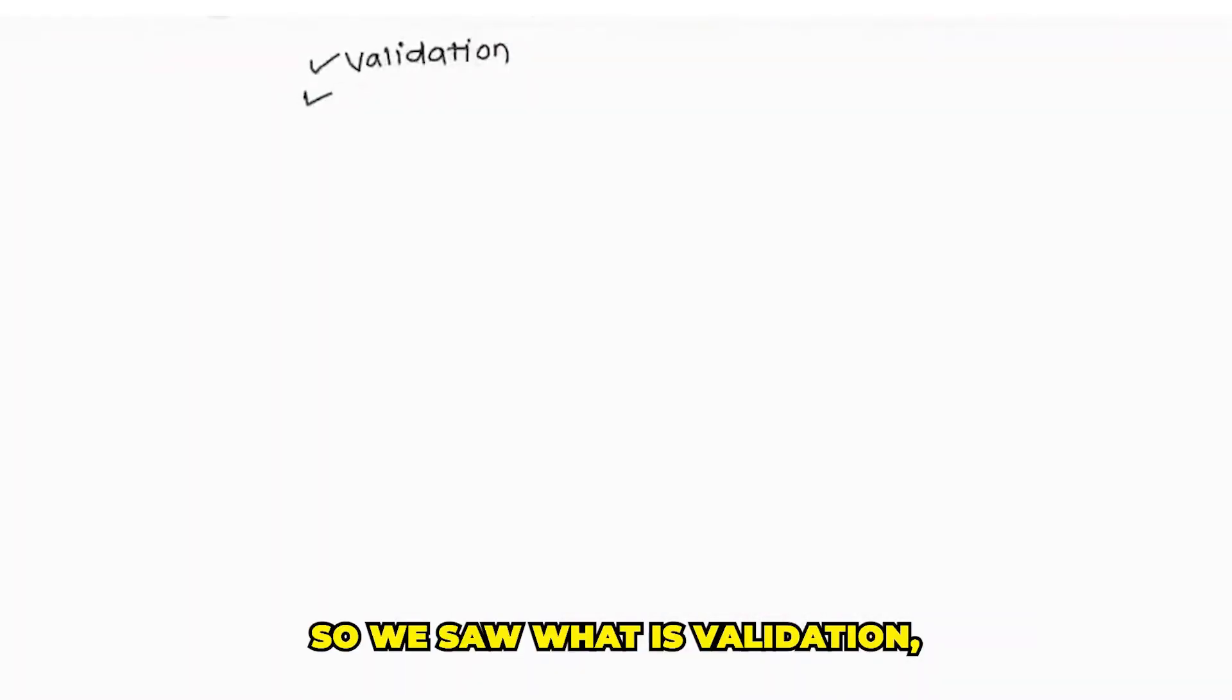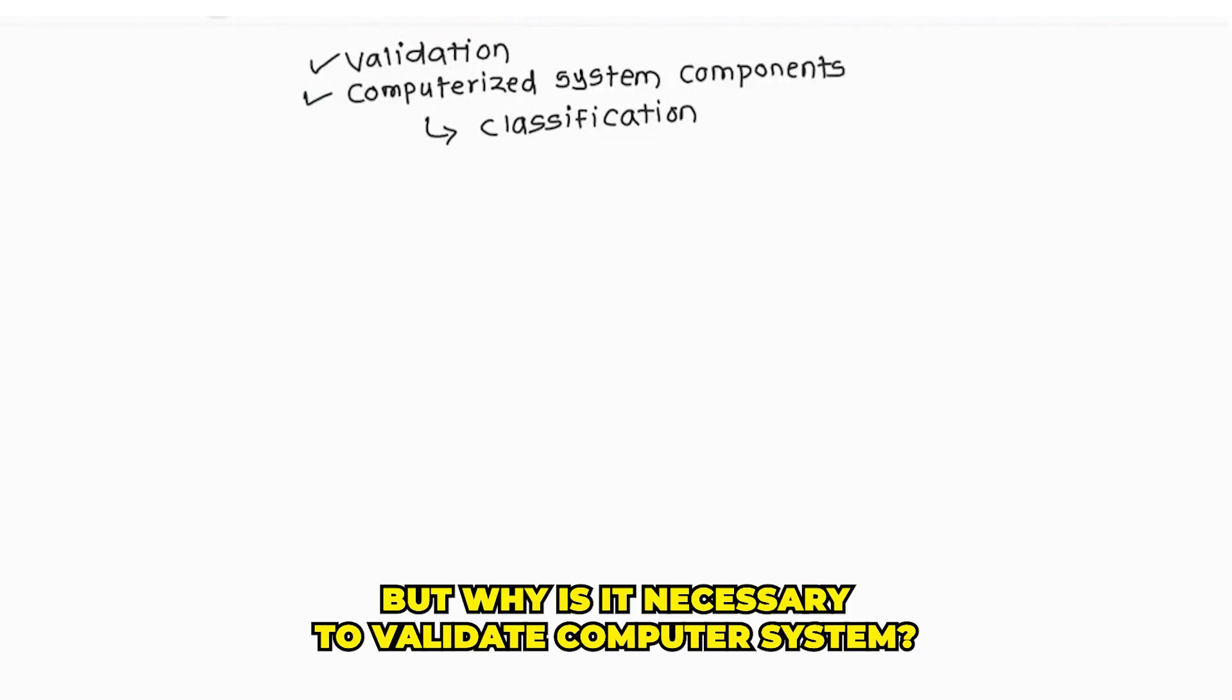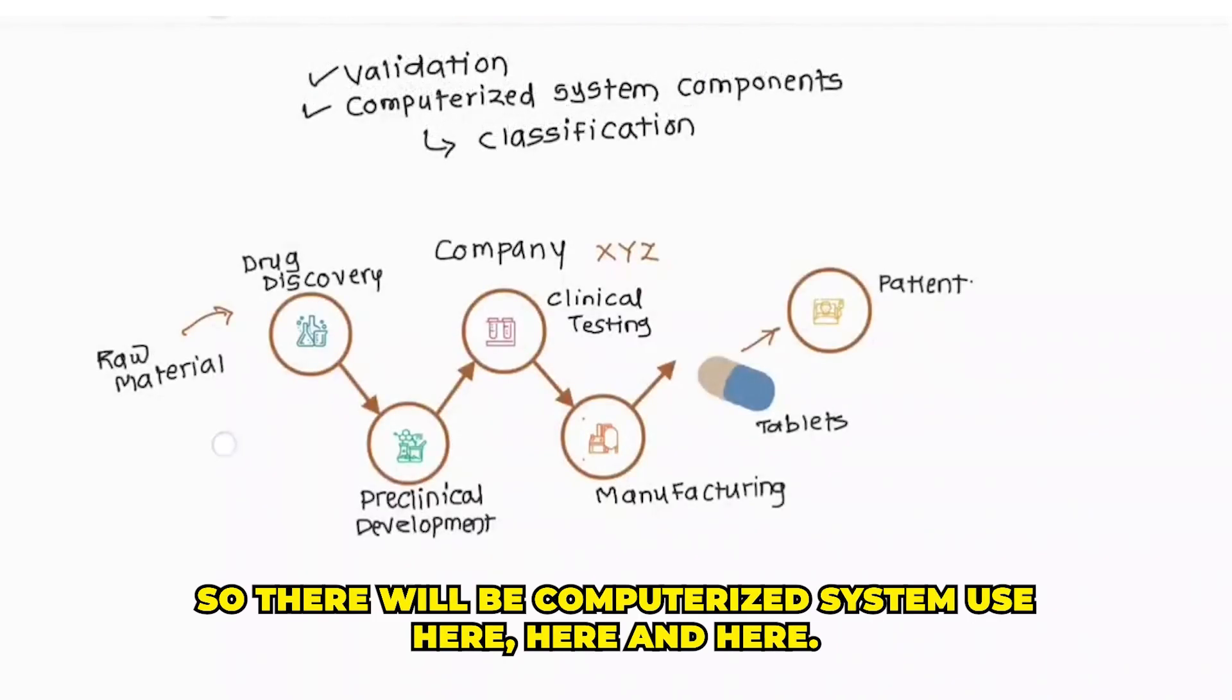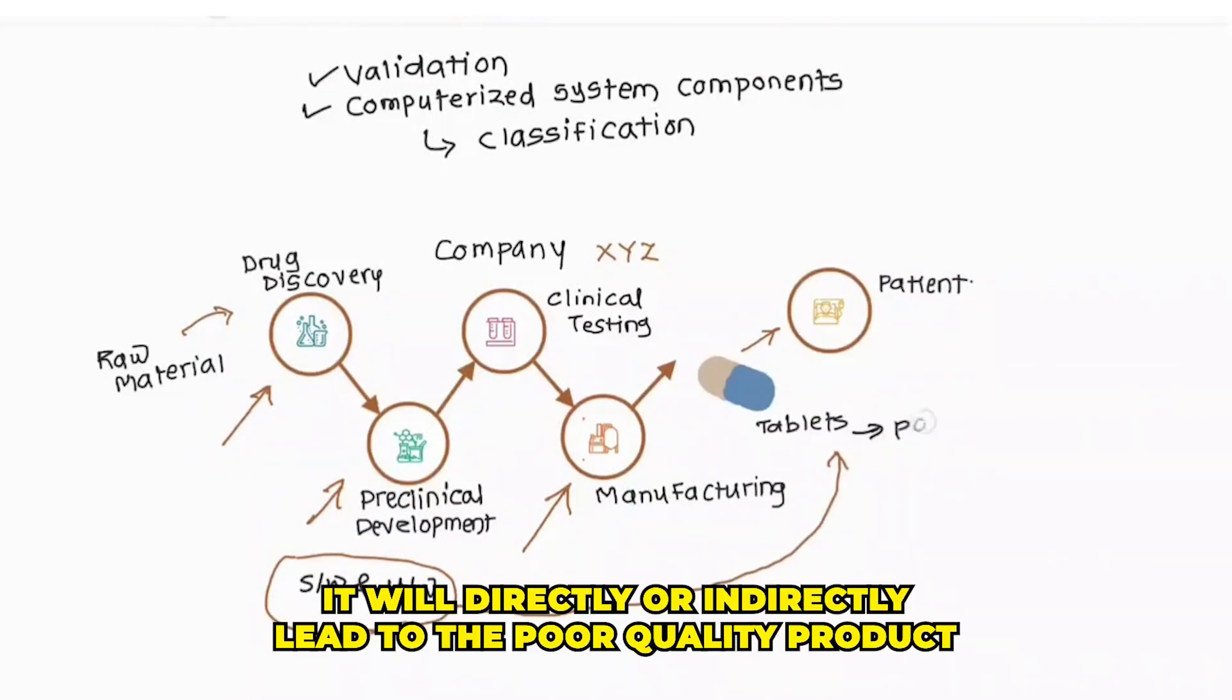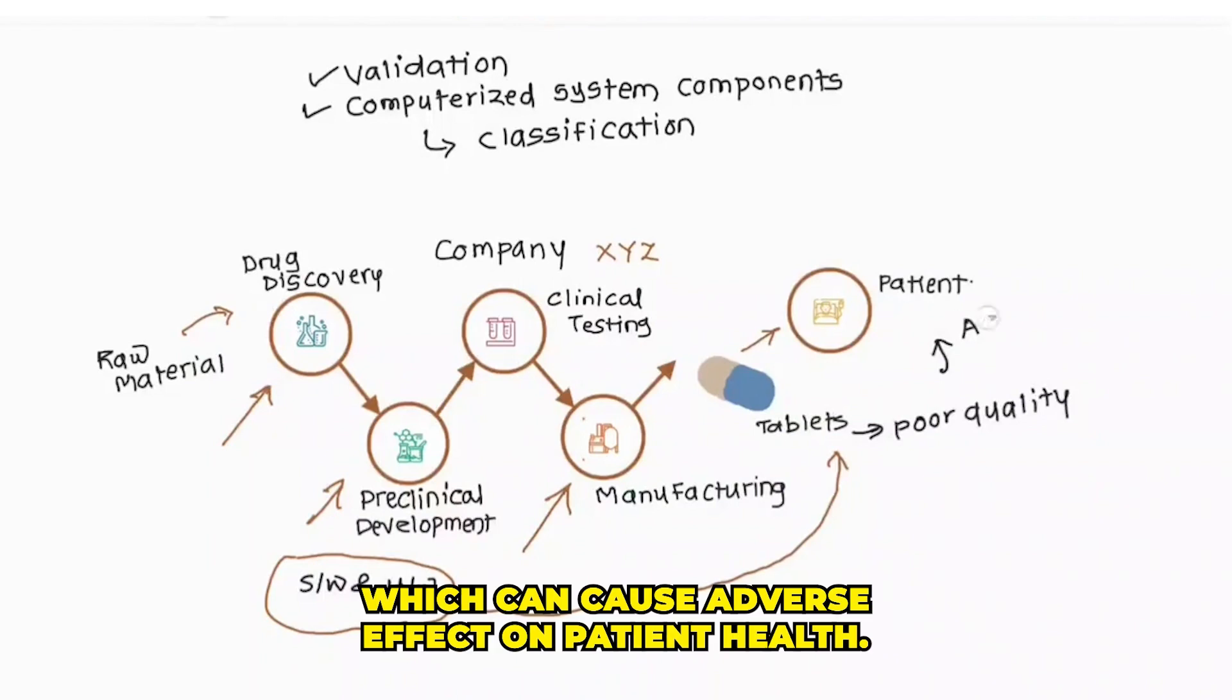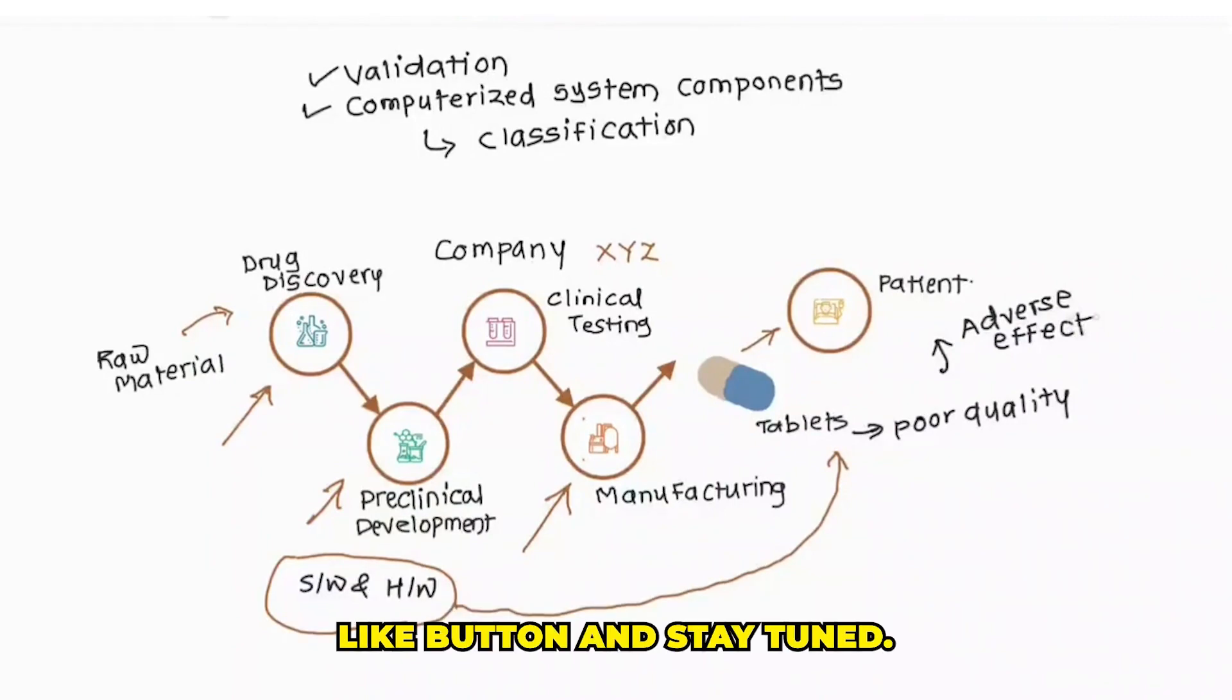So we saw what is validation, what computerized system includes, and how computerized systems are classified. But why is it necessary to validate computerized systems? There will be computerized systems used here, here, and here in form of softwares and hardwares. If something goes wrong somewhere along this line, it will directly or indirectly lead to poor quality product, which can cause adverse effects on patient health. So that's it in this video. If you like this video, do press that like button and stay tuned.